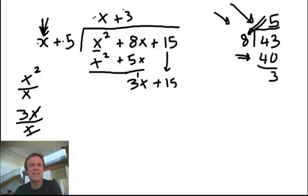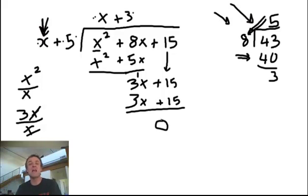And again, I'm going to multiply back. And what's 3 times x is 3x. Now, notice this one. 3 times 5 is 15. So, when I do subtract both of those, actually, I get no remainder. So, actually, x plus 5 goes into x squared plus 8x plus 15, x plus 3 times. That's the long division.